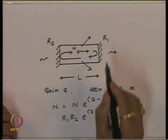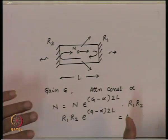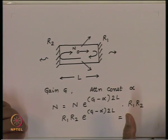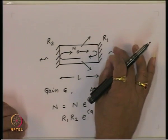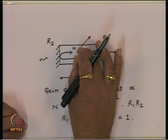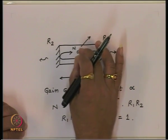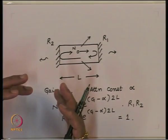Considering all losses inside this medium and the partial reflection from the mirrors, if this condition is satisfied, you will have the net photon flux constant inside the region and the net photons leaking out will also be constant. So we will have constant radiation coming out of this system, with the same properties as the photons inside, and inside this region the photons are coherent — so this radiation coming out will also be coherent.